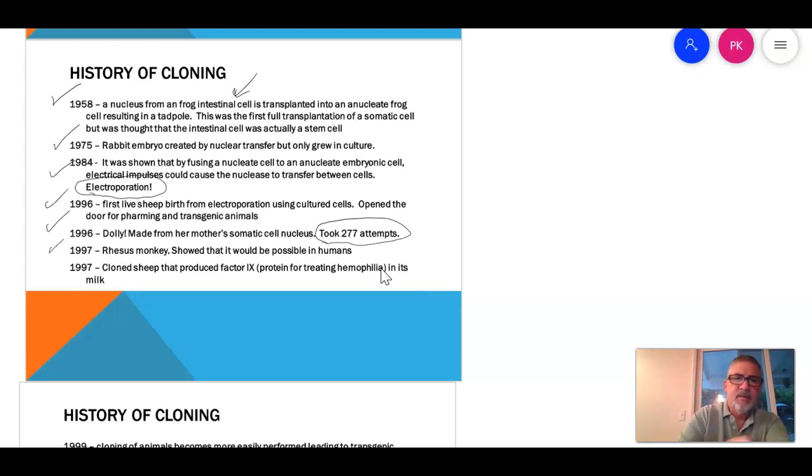1997. Because Dolly was a success, Dolly cloned a rhesus monkey. And they said, well, if we can do this, we can probably do humans. And about this time, 1998, we get a lot of legislature on stem cell research just kind of putting the brakes on this. We figure out we can do this stuff, but we may want to take a look at if we should. So 1997 is an important one. We created transgenic cow that can produce factor 9 for treating hemophilia. So this is successful farming.